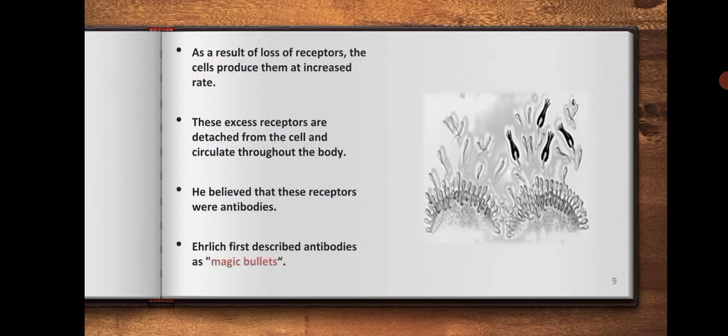As a result of loss of receptors, the cells produce them at increased rate. These excess receptors are detached from the cell and circulate throughout the body. He believed that these receptors were antibodies. Ehrlich first described antibodies as magic bullets.